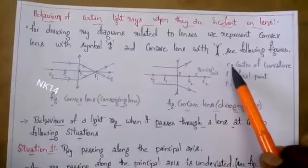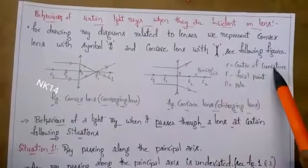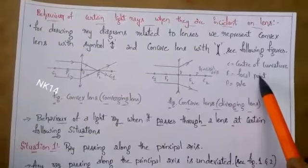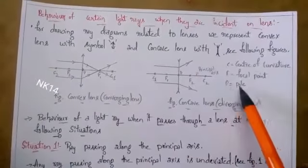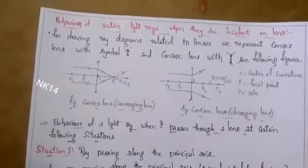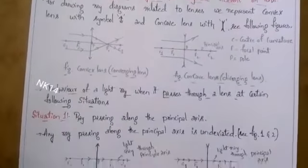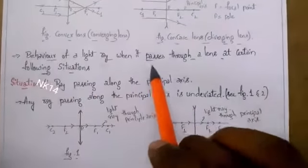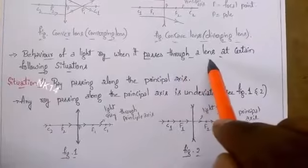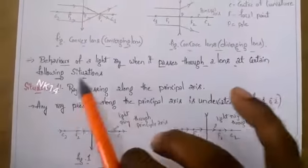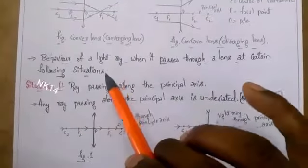The important points on the principal axis are C, F, and P. C indicates the center of curvature, F indicates the focal point, and P indicates the pole. Now coming to the topic — the behavior of a light ray when it passes through a lens in certain situations.